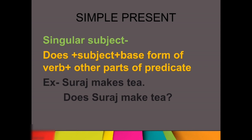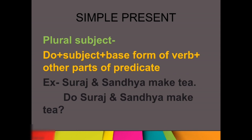Ye sirf tab karna hai jab aapka subject singular hai — jaisa ki yaha pe Suraj hai. Now let's talk about plural subject. Agar aapka subject plural hai, like Suraj and Sandhya make tea. Ab yaha pe two subjects aa gaye — plural ho gaya. How we will make it? Do plus subject plus base form of the verb plus other parts of the predicate. Do Suraj and Sandhya make tea? Then question mark. Haa pere does ki jagah aapne Do use kiya because we are having plural subject. We will always put question mark at the end.